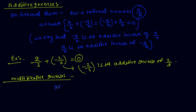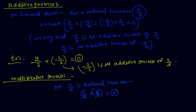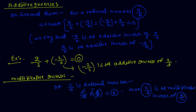If c by d is a rational number and we multiply c by d with another rational number d by c, and the multiplication result is 1, then we can say that c by d is the multiplicative inverse of d by c, or in reverse form, d by c is the multiplicative inverse of c by d.